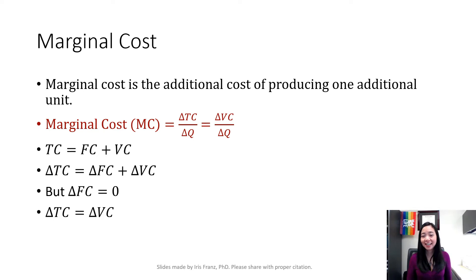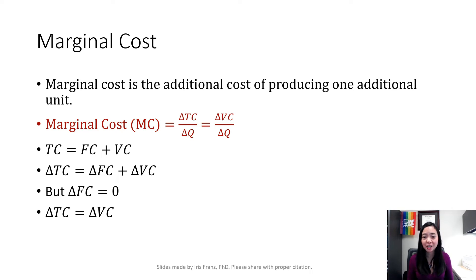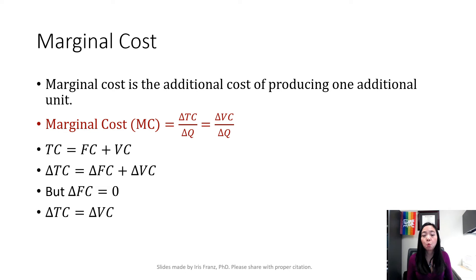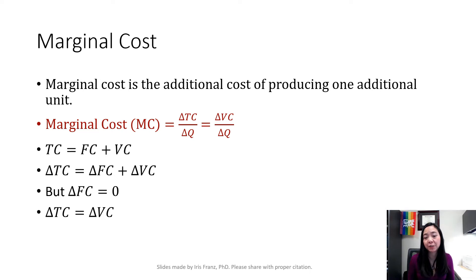Marginal cost, by definition, is the cost of producing one additional unit. Mathematically, marginal cost is equal to change in total cost divided by change in quantity. Marginal cost is also equal to change in variable cost divided by change in quantity. How so? Because total cost equals fixed cost plus variable cost, so change in total cost equals change in fixed cost plus change in variable cost. But fixed cost does not change, so change in fixed cost equals zero. Therefore, change in total cost equals change in variable cost, and your marginal cost equals change in total cost divided by change in quantity, which also equals change in variable cost divided by change in quantity.